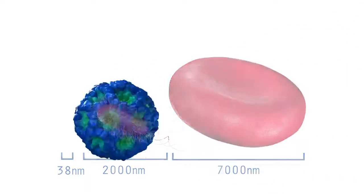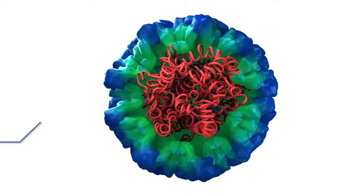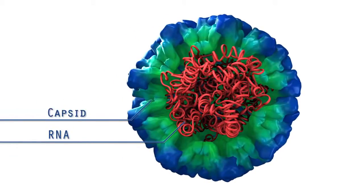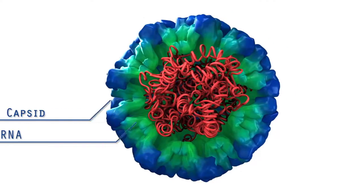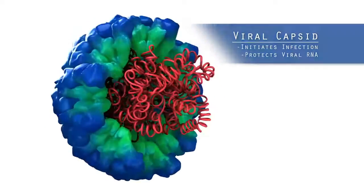These viruses consist of genetic material in the form of a single strand of RNA and a capsid, which is a protein coating that surrounds the RNA. The capsid is important because its interaction with the host cell initiates infection, and it protects the viral RNA.